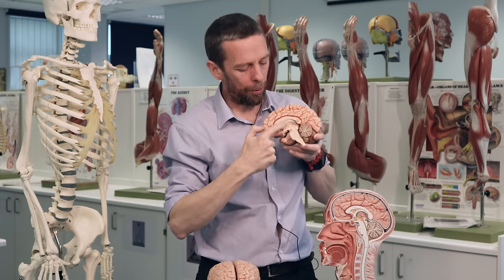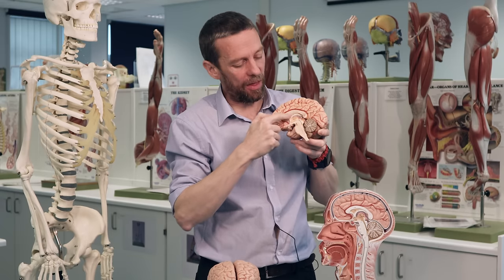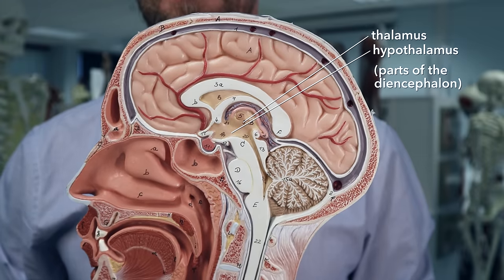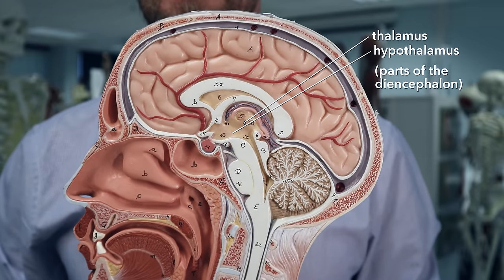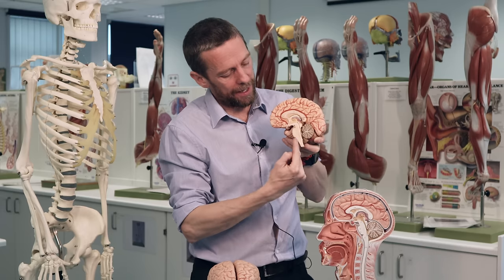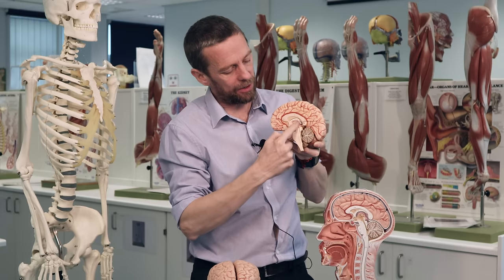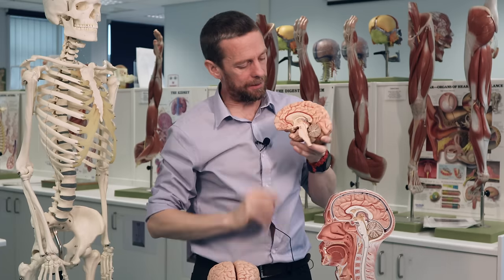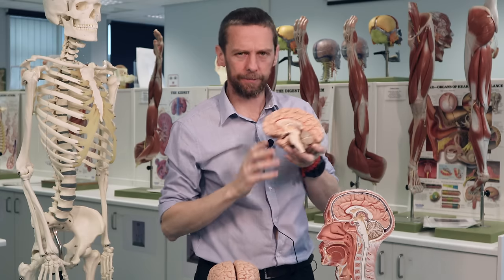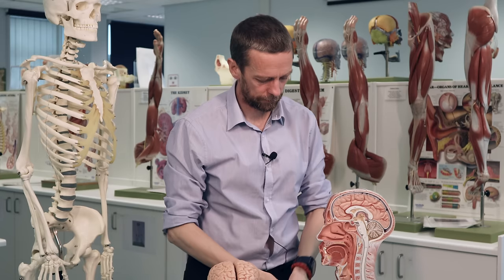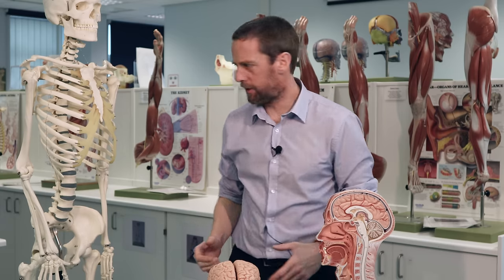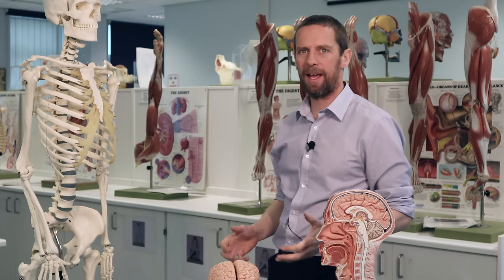We can also see that surrounding and over the top of the cerebrum is the thalamus and the hypothalamus. When people talk about the diencephalon, that's what they're referring to. The brainstem comes up and connects to the diencephalon, which then connects out to the cerebral hemispheres.